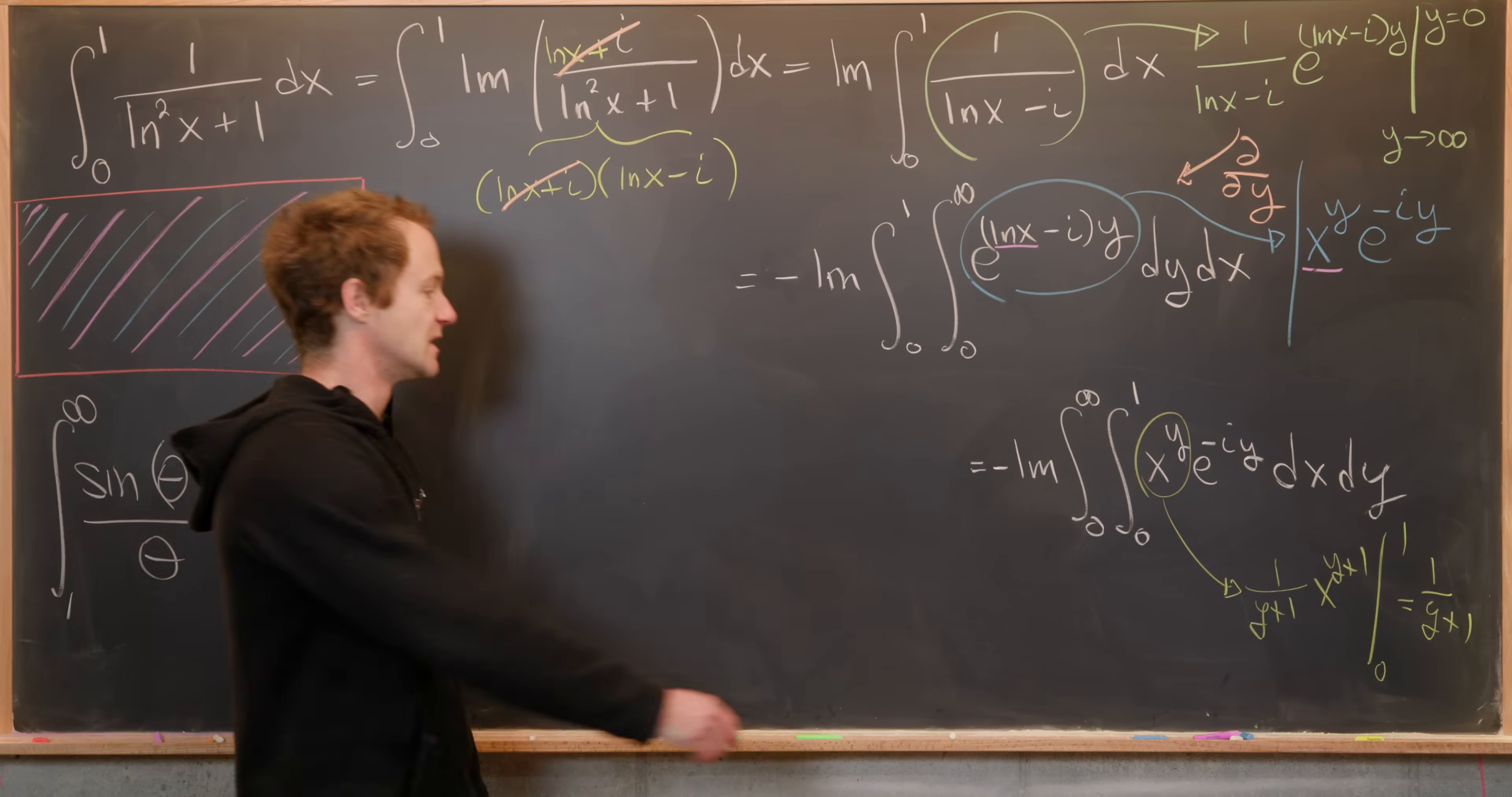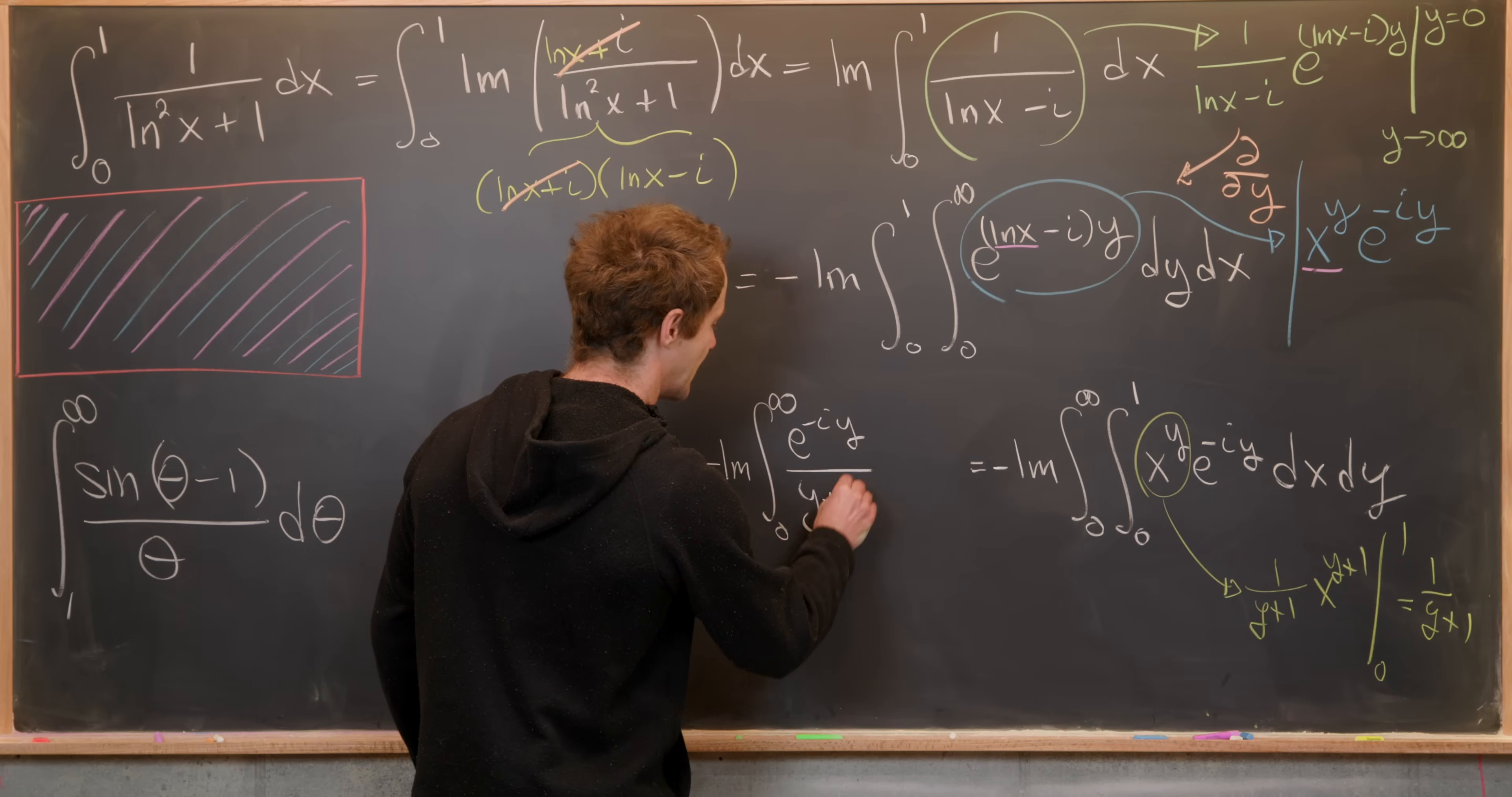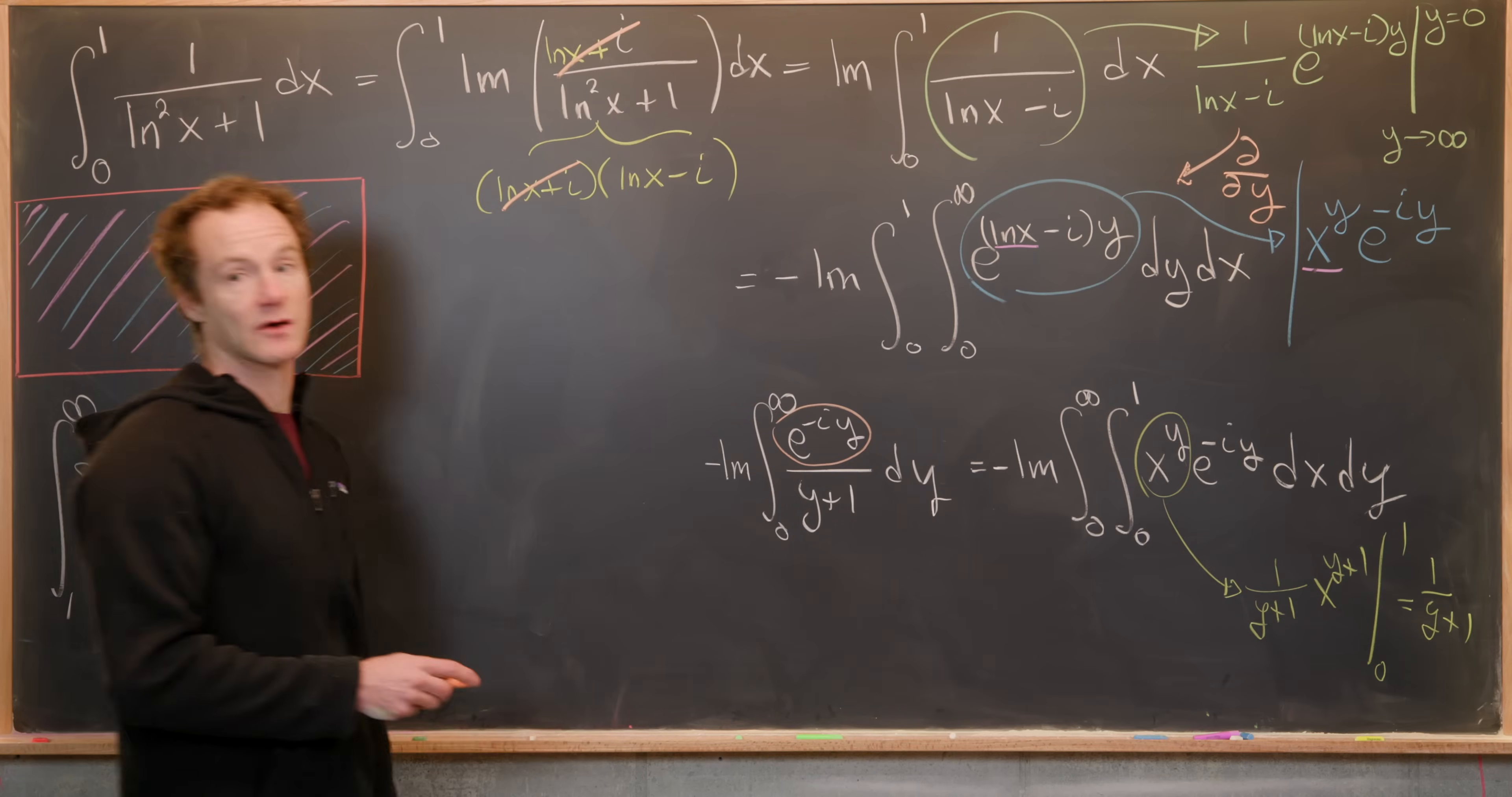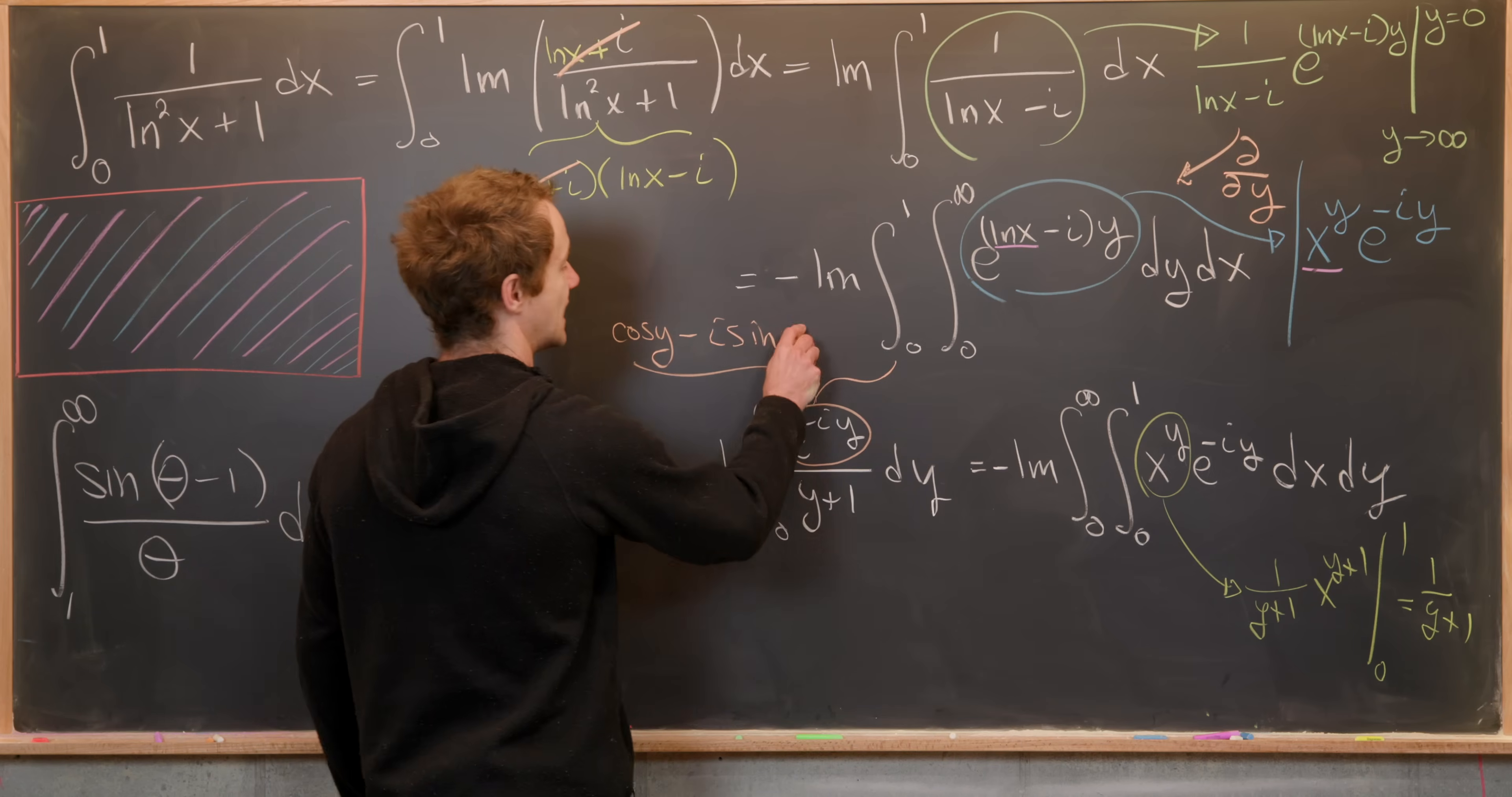So that will leave us with minus the imaginary part of the integral from zero to infinity of e^(-iy)/(y+1) dy, like that. Now we're actually zooming in on the end. We can take this exponential thing right here, which is a complex exponential, and use Euler's formula to rewrite it as cos(y) - i·sin(y).